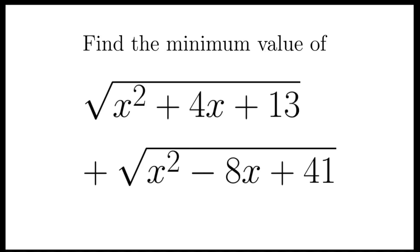In this video, we are going to find the minimum value of square root of x squared plus 4x plus 13 added by the square root of x squared minus 8x plus 41.